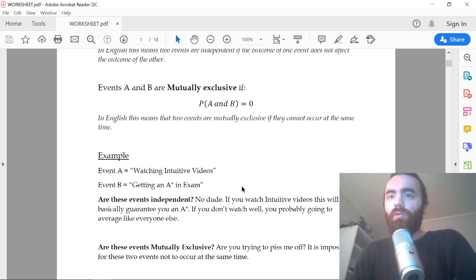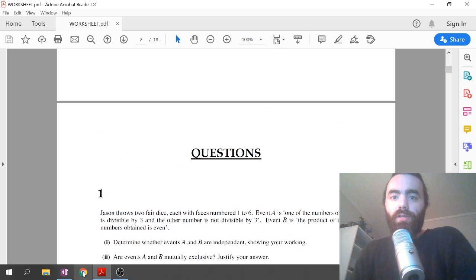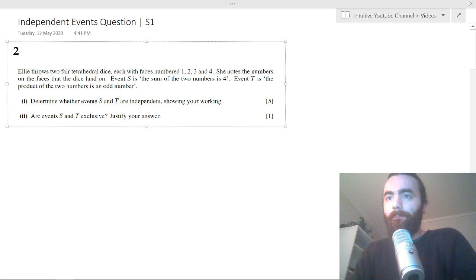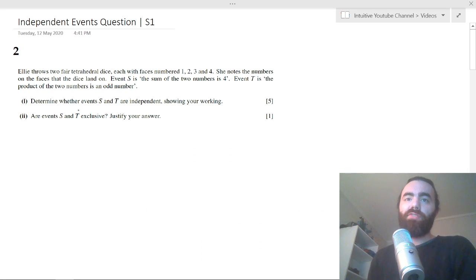And you can just show that through this equation. But I thought we could just do a question from the worksheet, a good example of this style of question. This is from the worksheet. It says here that Ellie throws a fair tetrahedral dice, each with faces numbered one to four. She knows the numbers on the faces of the die that the die land on. Event S is that the sum of these two numbers is four, and event T is the product of these two numbers is an odd number.